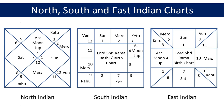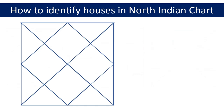Let's now focus on how to identify houses in the North Indian chart. The most important thing you need to remember is that the houses in the North Indian chart are always fixed. In all three charts the position of the ascendant tells you the location of the first house, but since in the North Indian chart the houses are fixed, the ascendant is in fact placed in the fixed first house location.